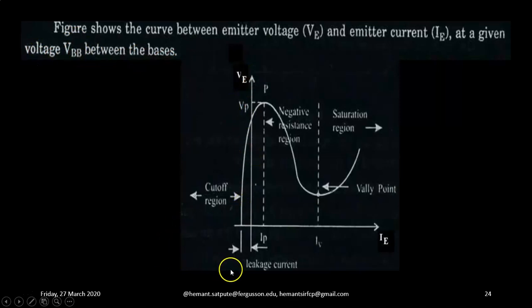This figure shows the curve between emitter voltage VE and the emitter current IE at a given voltage VBB between the bases. So it is a pictorial characteristics of UJT means a pictorial presentation of the graph of emitter voltage VE against the emitter current at constant value of VBB.